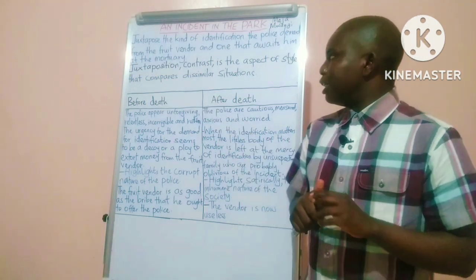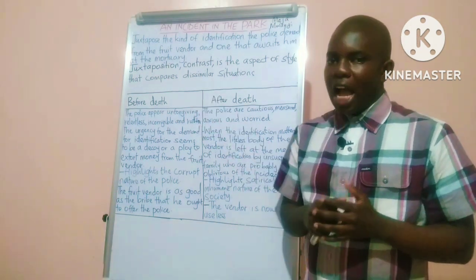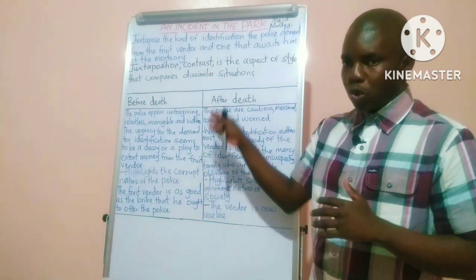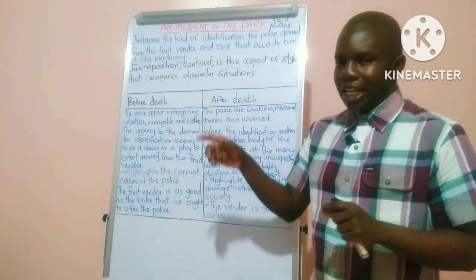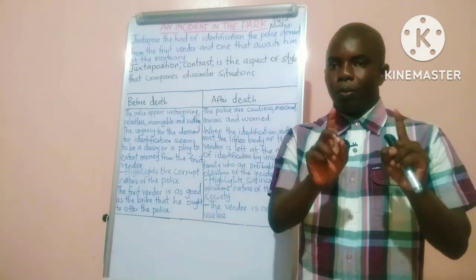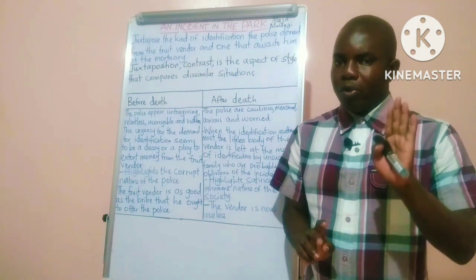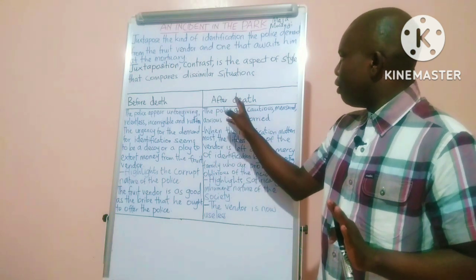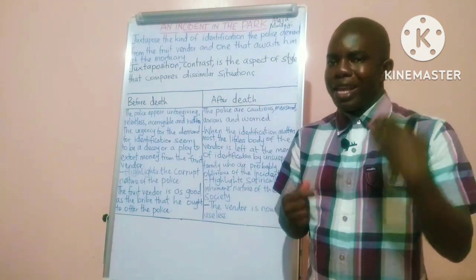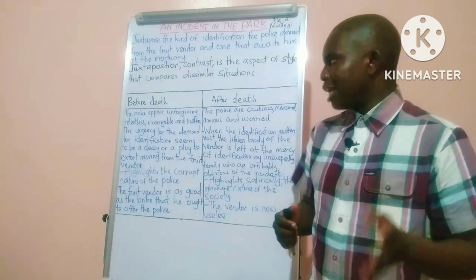Now, fast forward to my take on this. I have divided my table into two columns. The first one is before death — that is the kind of identification that the police demand from the fruit vendor — and the second is the kind of identification that awaits the fruit vendor after his death at the mortuary.